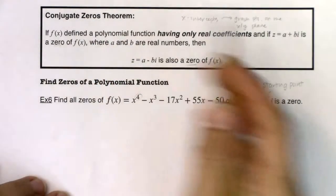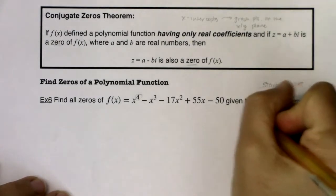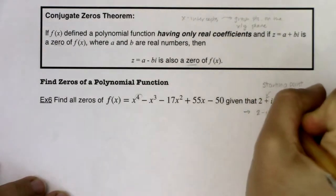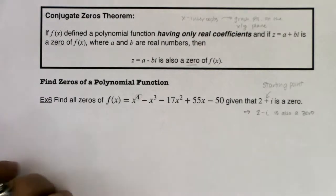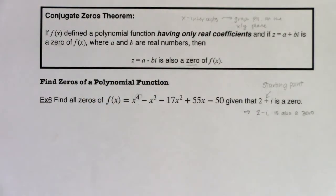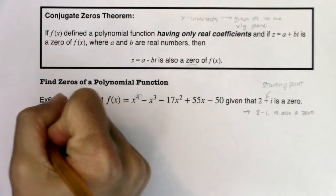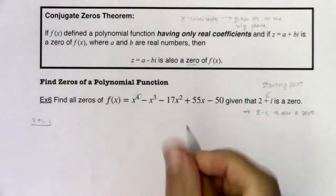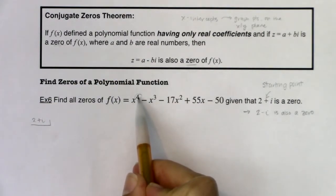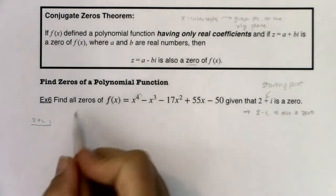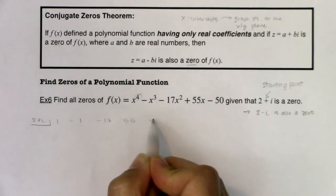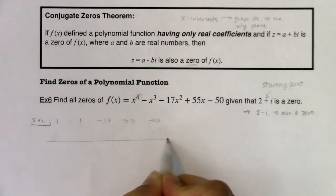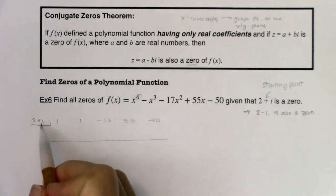Because of the conjugate zeros theorem, if 2 plus i is a zero, I automatically know 2 minus i is also a zero. Now it's up to you which one you want to start with in terms of synthetic division — I'm just going to start with 2 plus i. If this is a zero, I put it in the house, then look at the coefficients. Checking the powers on x: four, three, two, one, zero — I'm good. So let me just put the coefficients; I don't need a placeholder.